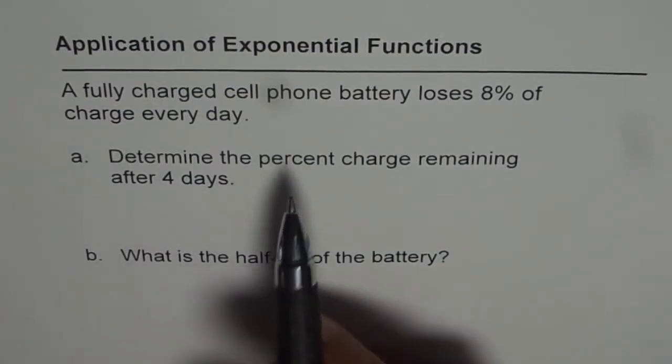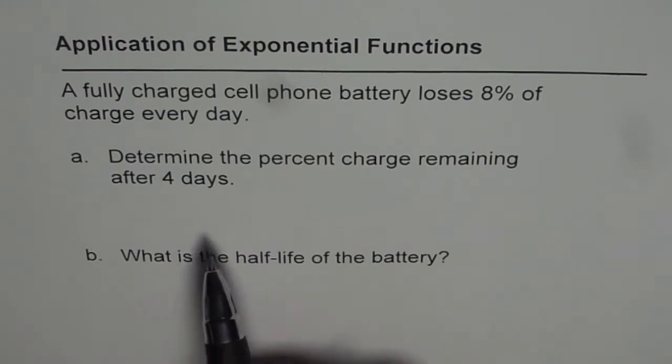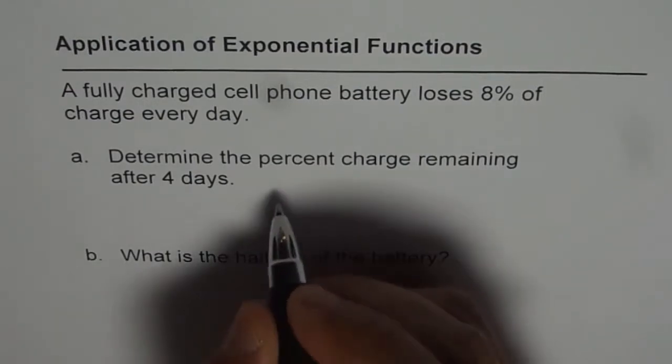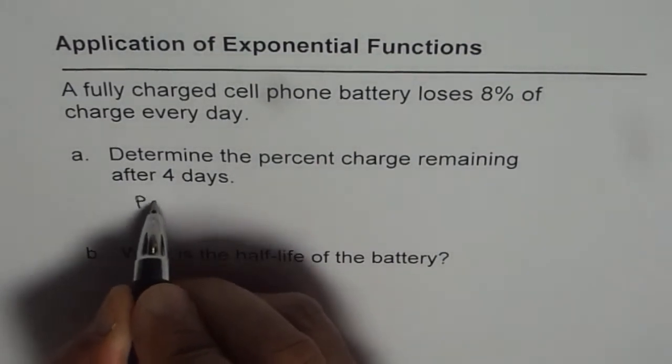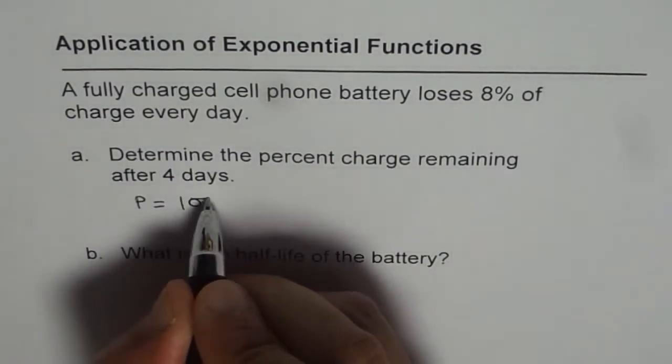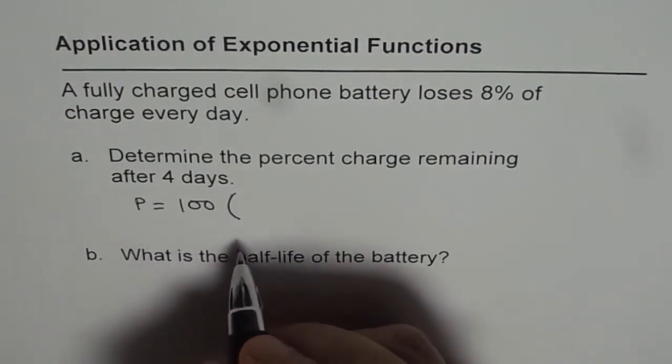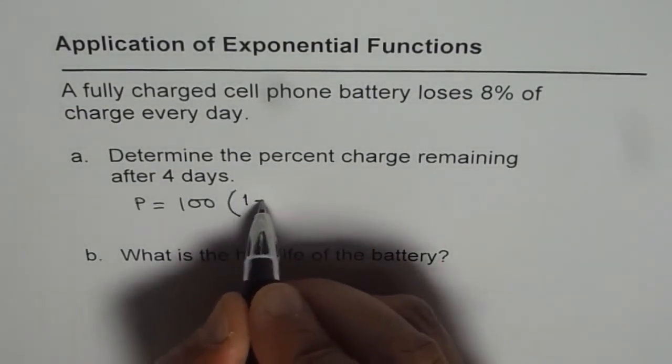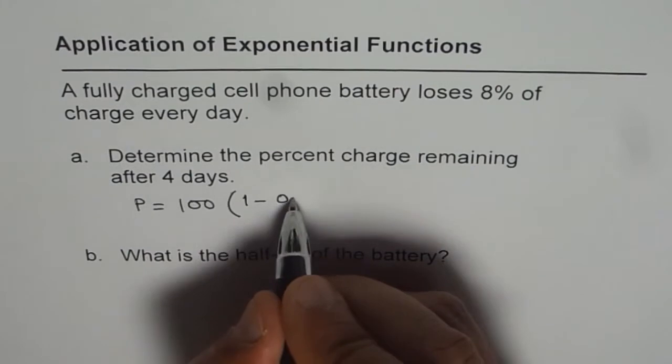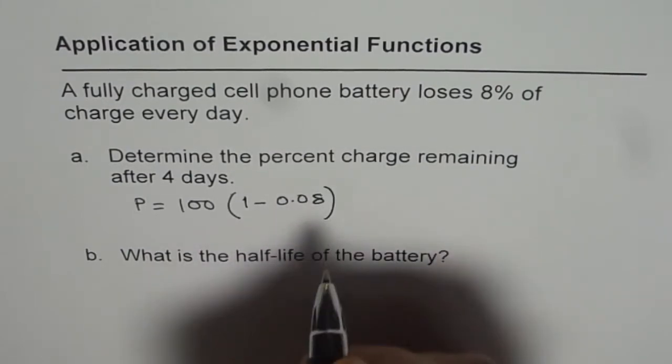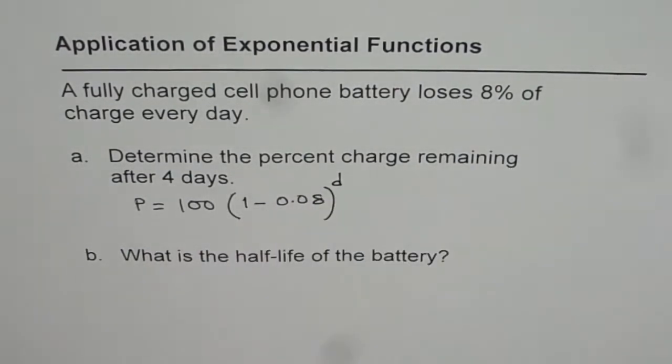Let's first write the formula for remaining charge on the battery. If we start with a charge of 100%, percent remaining should be: P equals initial, 100%, and 8% is being lost per day. So it would be 1 minus 8%, which is 0.08, to the power of D, where D is the number of days.